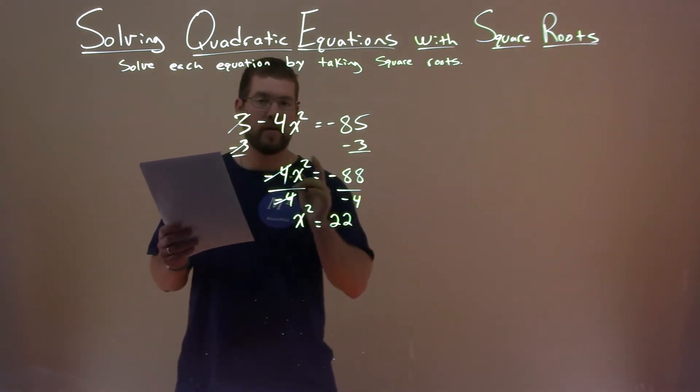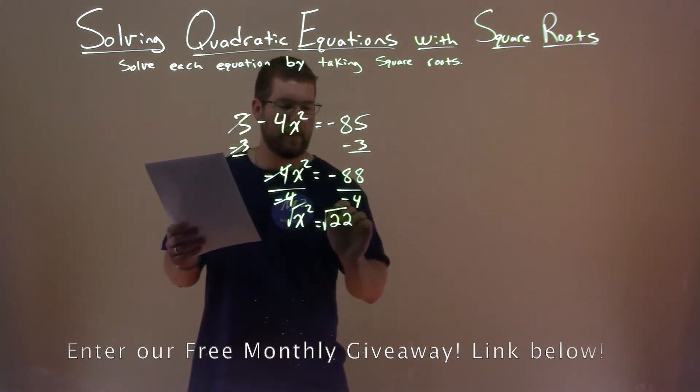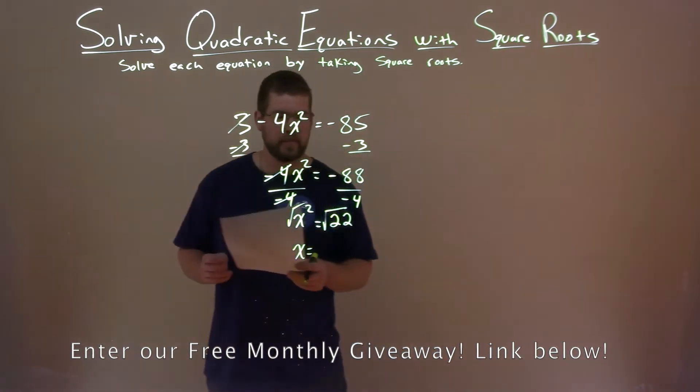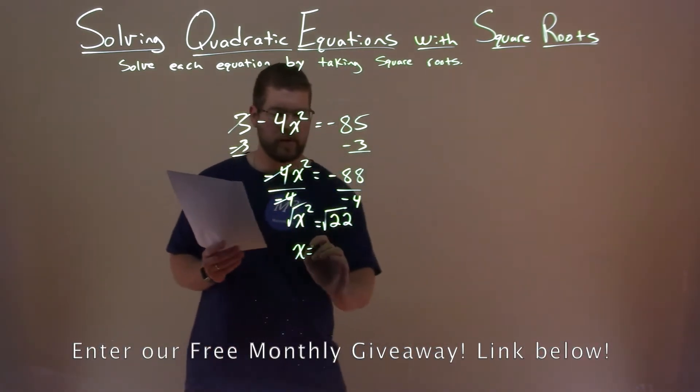Now, we get rid of the square. Square root both sides. x is completely by itself here, and the square root of 22, well, that's going to be an approximate answer.